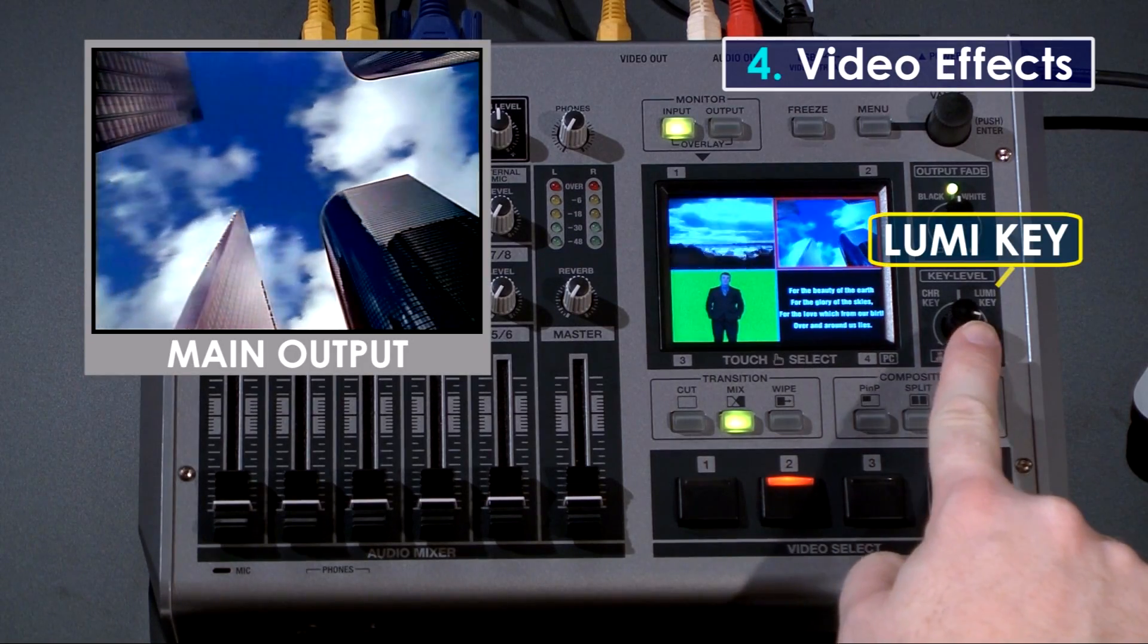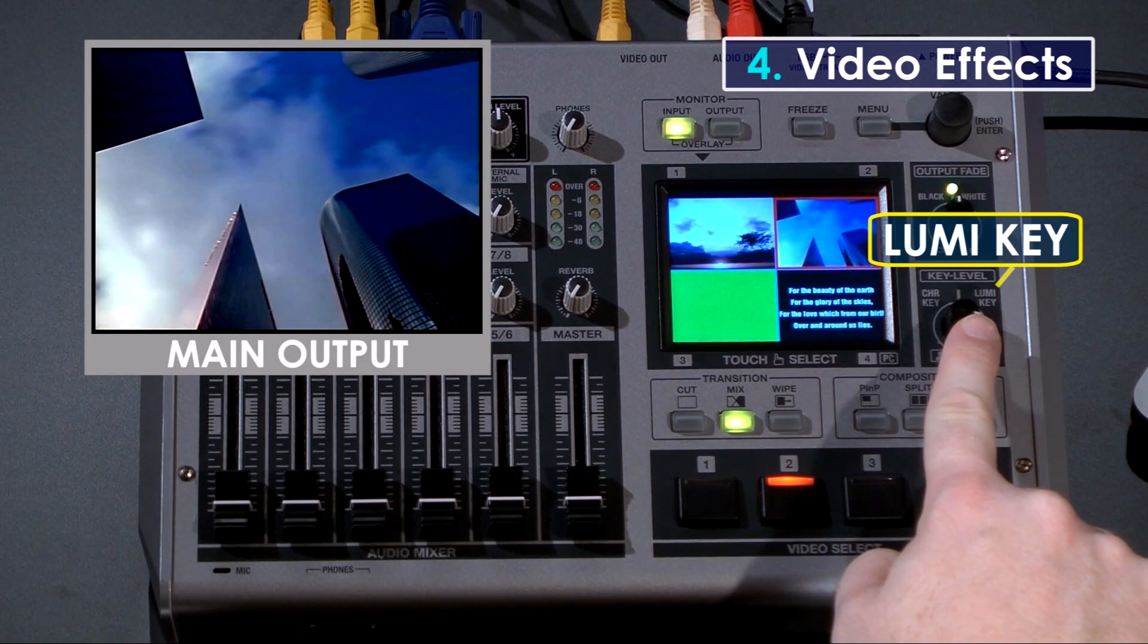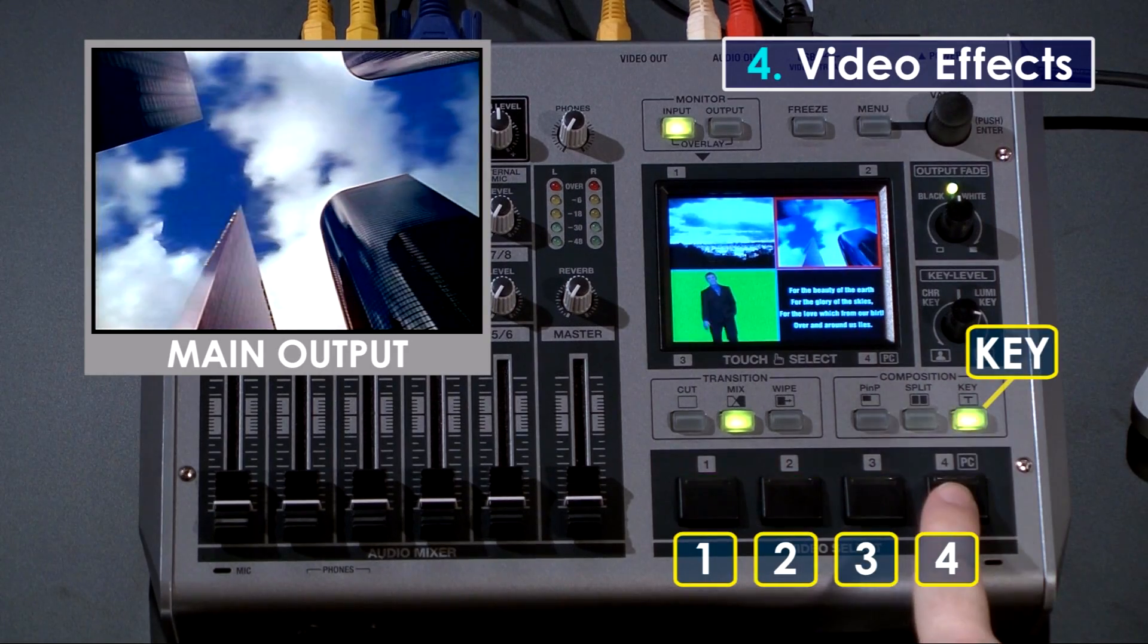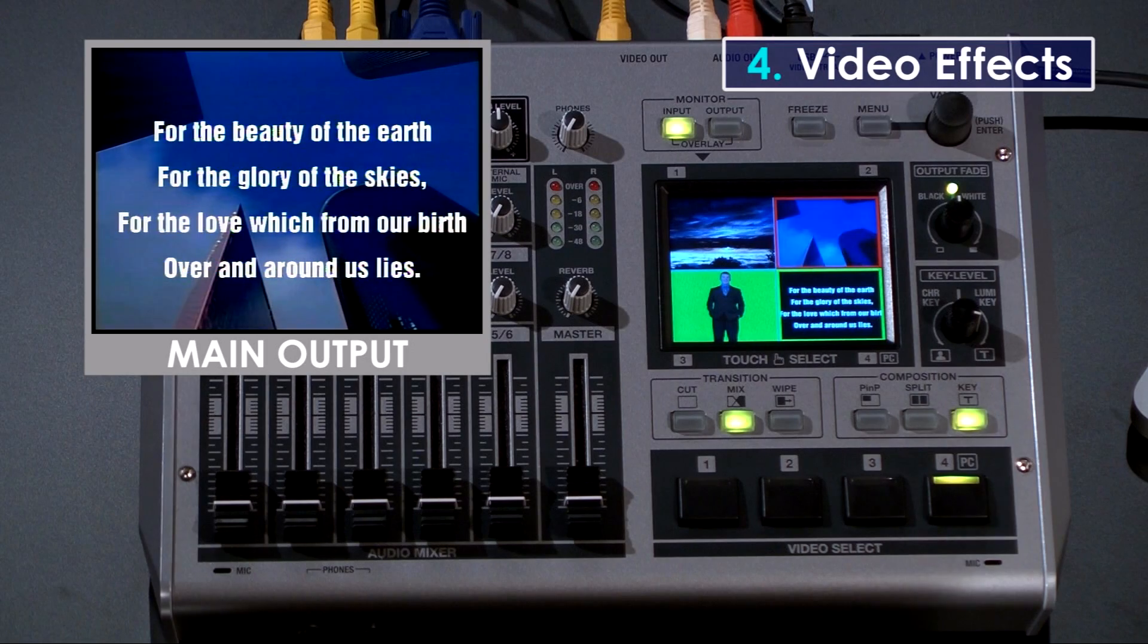The LumaKey function uses a black area or a white area as the superimpose image. This makes it easy to use text, titles or logos from your PC placed in front of any video.